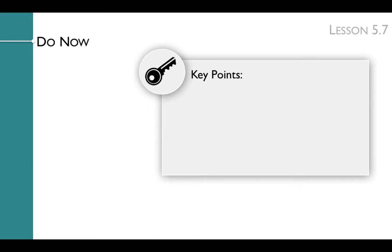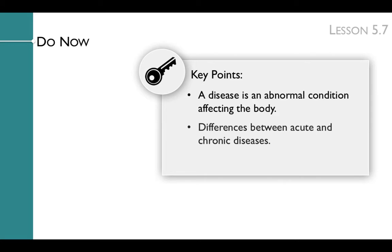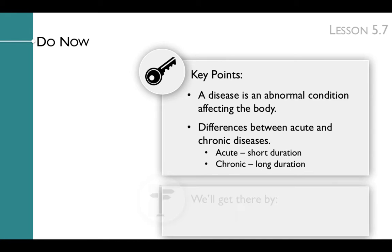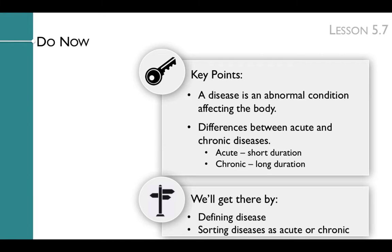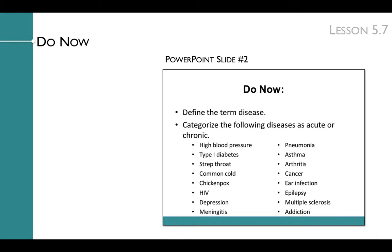The key points of the lesson's Do Now are: a disease is an abnormal condition affecting the body; the differences between acute and chronic diseases — acute diseases are short duration, and chronic diseases have long duration. We'll get there by defining disease and sorting diseases as either acute or chronic. Students will work with a partner to define the term disease and categorize diseases as either acute or chronic, then go over the Do Now in discussion.